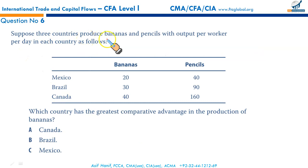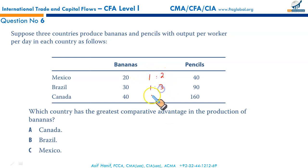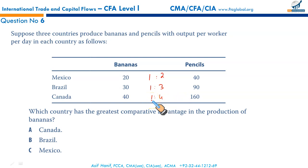Next question: suppose three countries produce bananas and pencils. Mexico produces 20 bananas and 40 pencils, Brazil produces 30 bananas and 90 pencils, and Canada produces 40 bananas and 160 pencils. Which country has the greatest comparative advantage in bananas? The opportunity cost ratios are: Mexico 1 banana costs 2 pencils, Brazil 1 banana costs 3 pencils, Canada 1 banana costs 4 pencils. Mexico has the lowest opportunity cost, so Mexico has the greatest comparative advantage in bananas — that makes C the correct option.